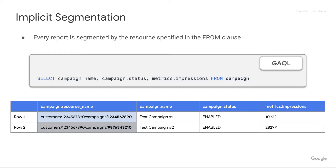The first thing to keep in mind is that there is some sort of implicit segmentation going on. Every report is segmented by the resource in the FROM clause — specifically by the unique identifier of that resource. In the Google Ads API, that unique identifier is the resource name, so results will be segmented by that resource name.